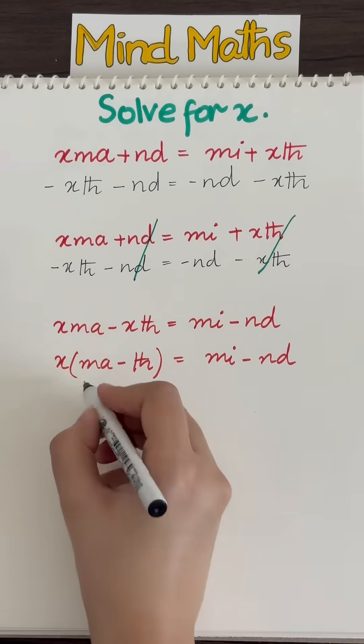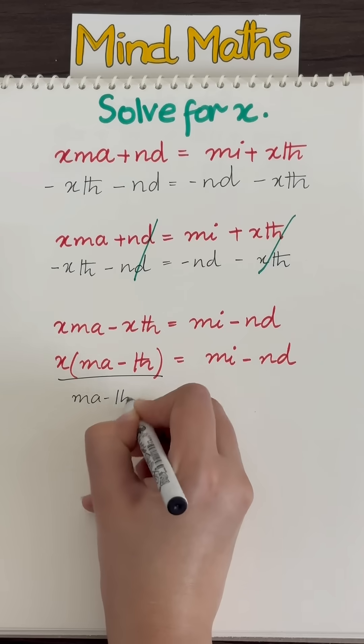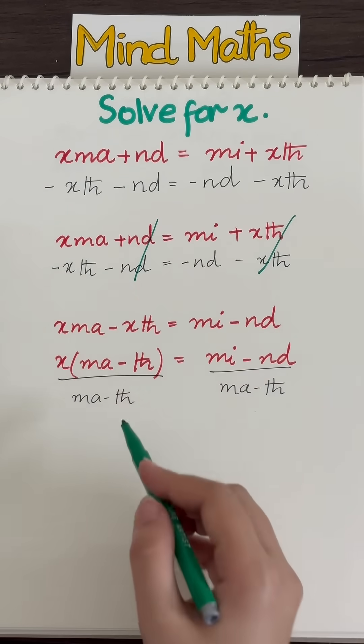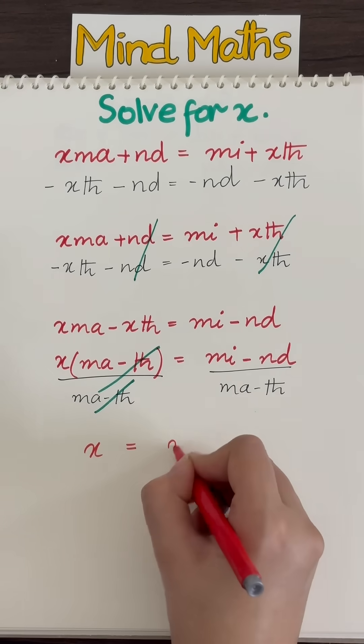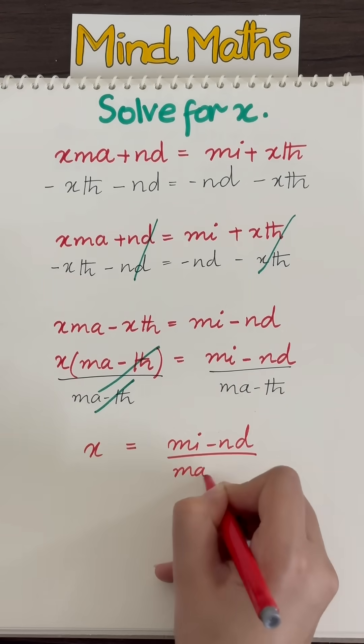Next, to get the X all by itself, we're going to divide both sides by MA minus TH. The MA minus THs on top and bottom will divide each other out, and that leaves us with X equals MI minus ND over MA minus TH.